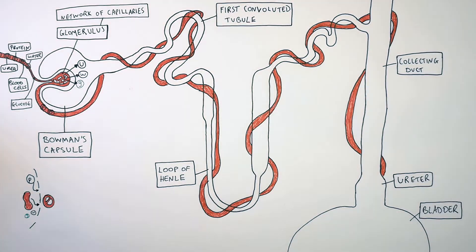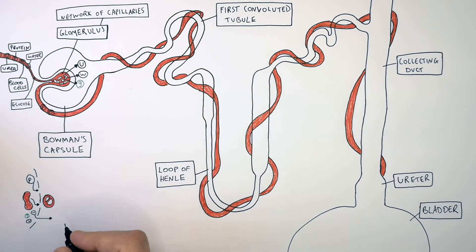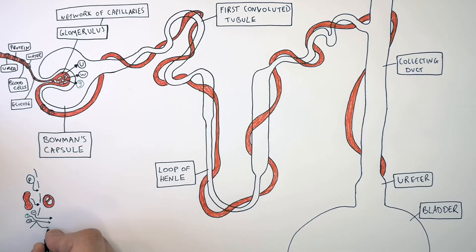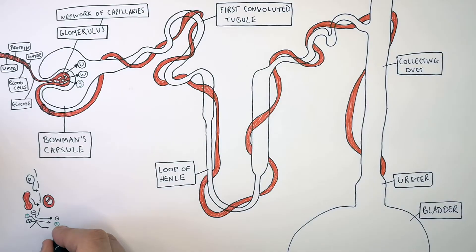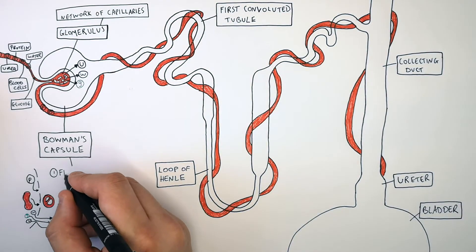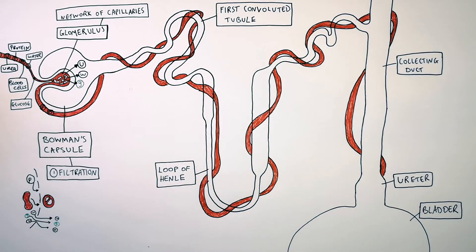These molecules have to pass through a partially permeable membrane. Proteins and red blood cells are too large to pass through the partially permeable membrane from the glomerulus into the Bowman's capsule. Whereas glucose, water, and urea are small enough to pass through. We call this stage filtration, because molecules are filtered out of the blood and some molecules are left behind.